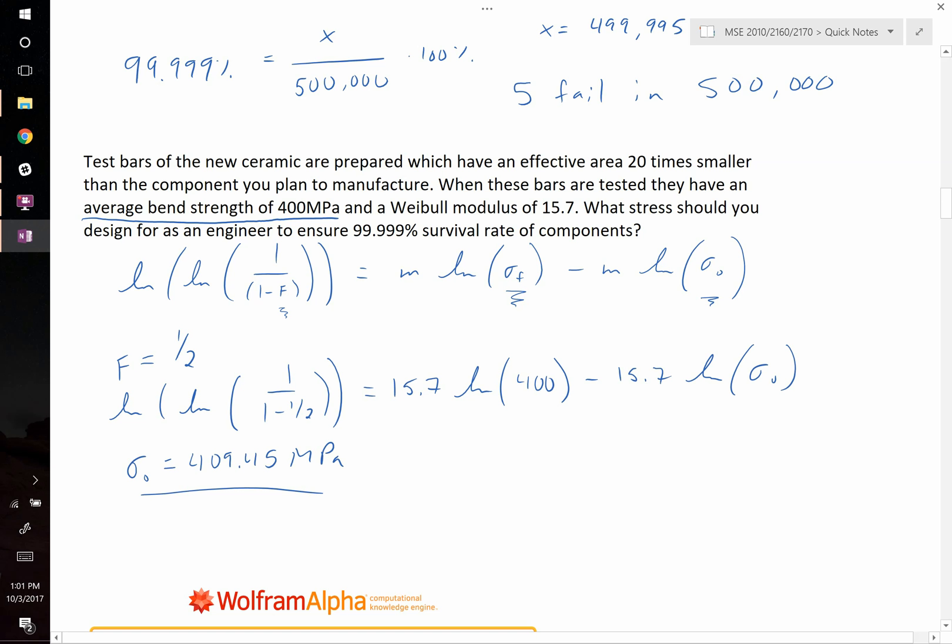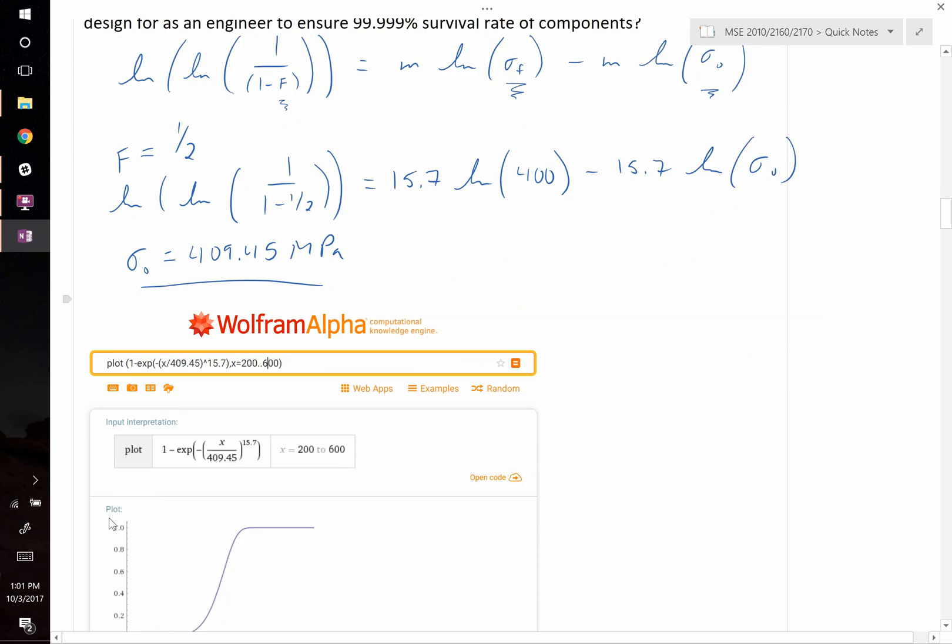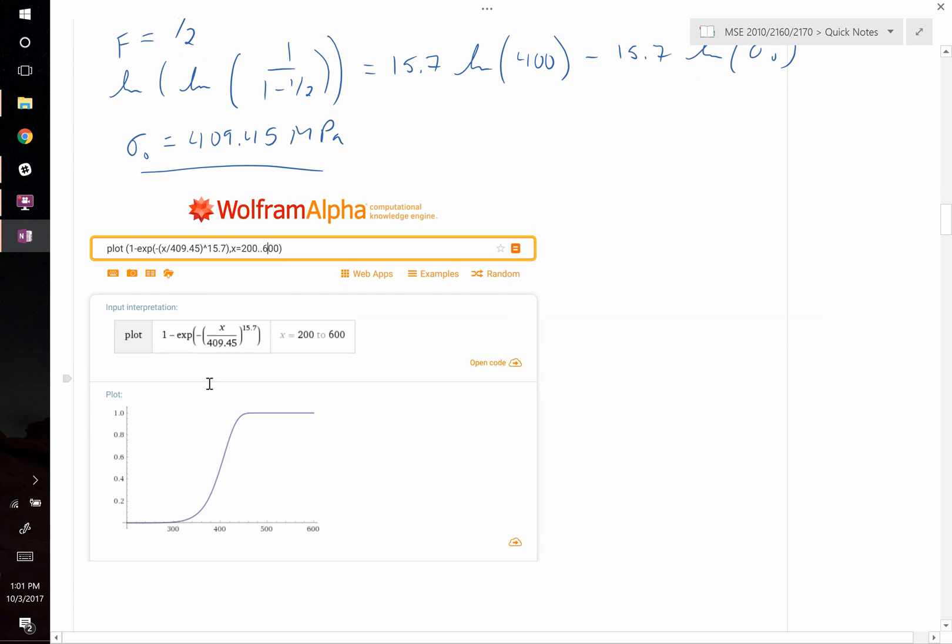Now that we know that, we can go ahead and plot what the Weibull distribution is in terms of failure. In this plot on Wolfram Alpha, what I'm doing is I'm plotting 1 minus the exponential of negative stress divided by the characteristic stress raised to the Weibull modulus. And you see here on the y-axis, this represents failure probability. So 0 means nothing fails, 1 means everything fails.